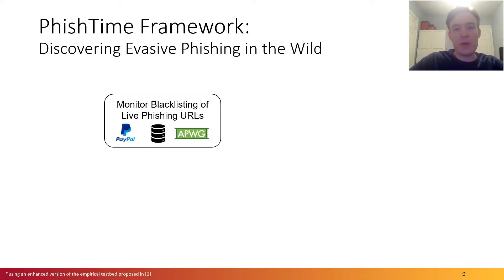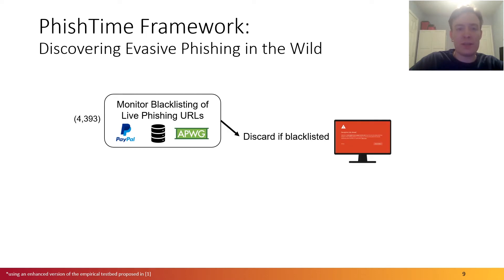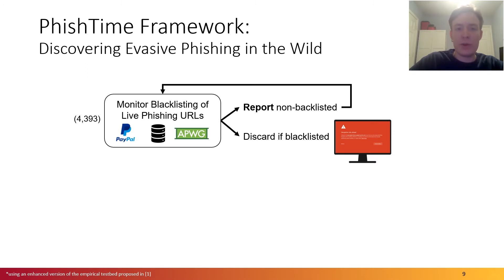To carry out continuous monitoring and evaluation of blacklists, we propose the Phishtime framework. This framework starts by monitoring the blacklist status of live phishing URLs collected from multiple data sources. In our deployment, we used URLs reported directly to PayPal as well as PayPal phishing URLs reported to the Anti-Phishing Working Group. During our deployment, we collected about 4,400 URLs total. We immediately checked their blacklist status and discarded those that were blacklisted initially. Those that were not blacklisted, we reported back to each respective blacklist, hoping they would be acted upon. We then continued monitoring those URLs, and if they were not subsequently blacklisted, we scrutinized them further to understand what went wrong.